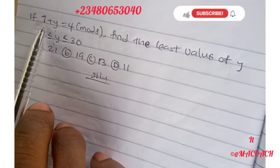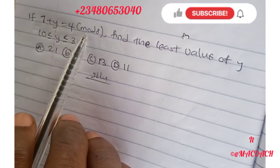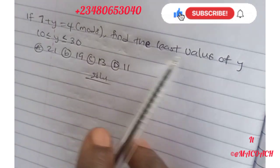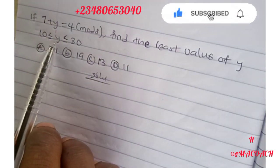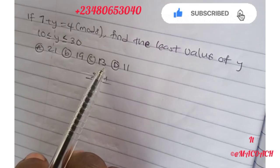The question states that if 7 + y = 4 (mod 8), find the least value of y where 10 ≤ y ≤ 30. We have our options here.